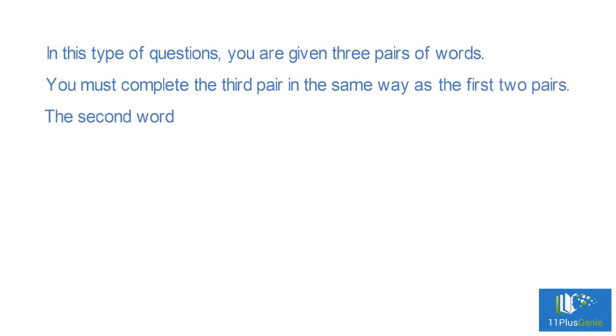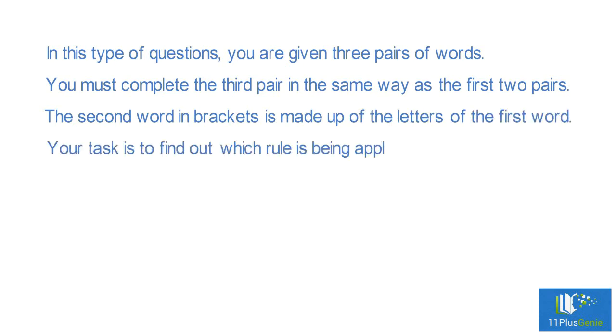The second word in brackets is made up of the letters of the first word. Your task is to find out which rule is being applied to the first two groups in order to find the answer for the third.